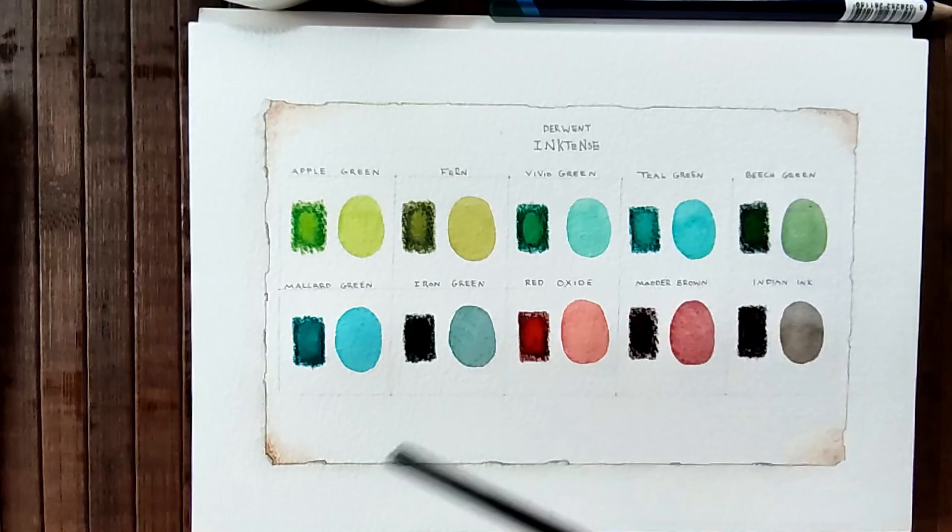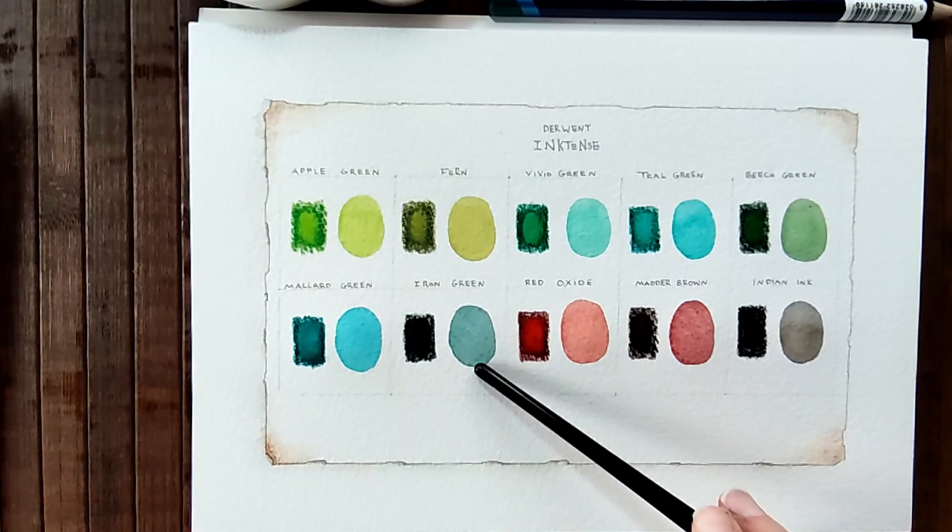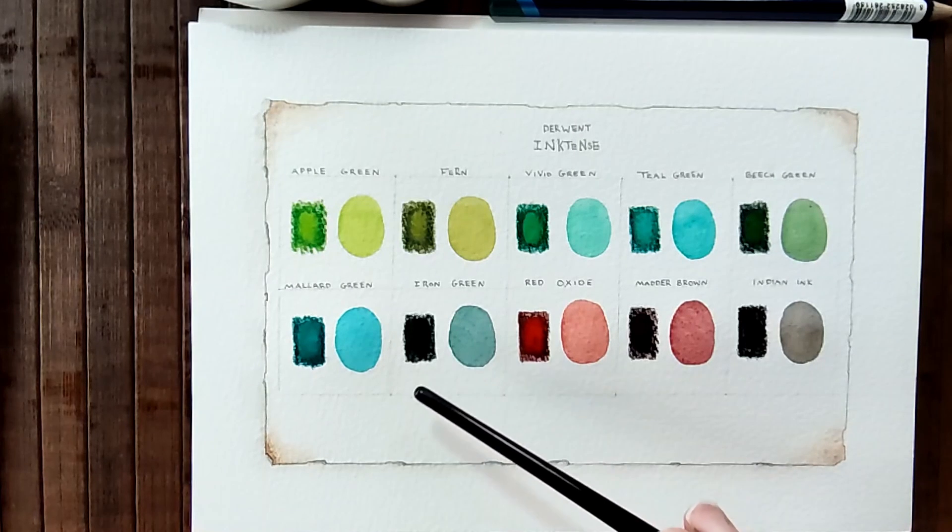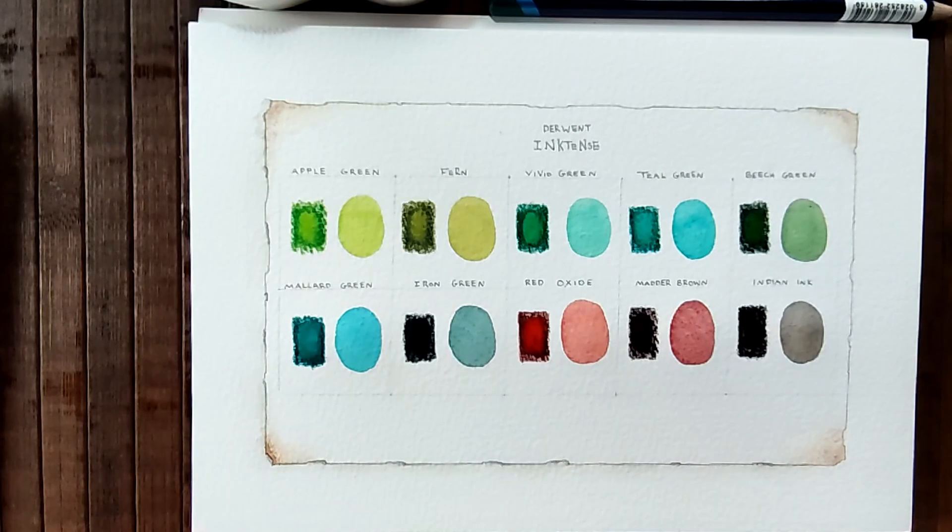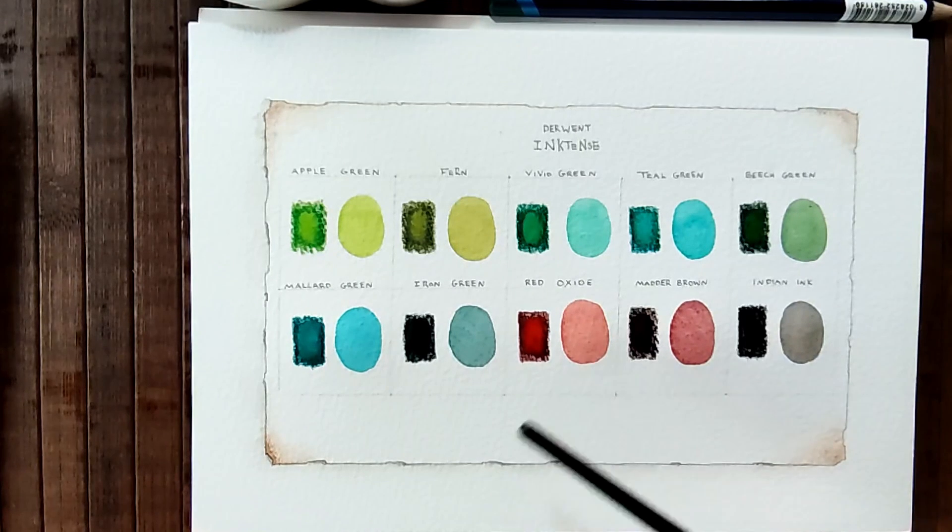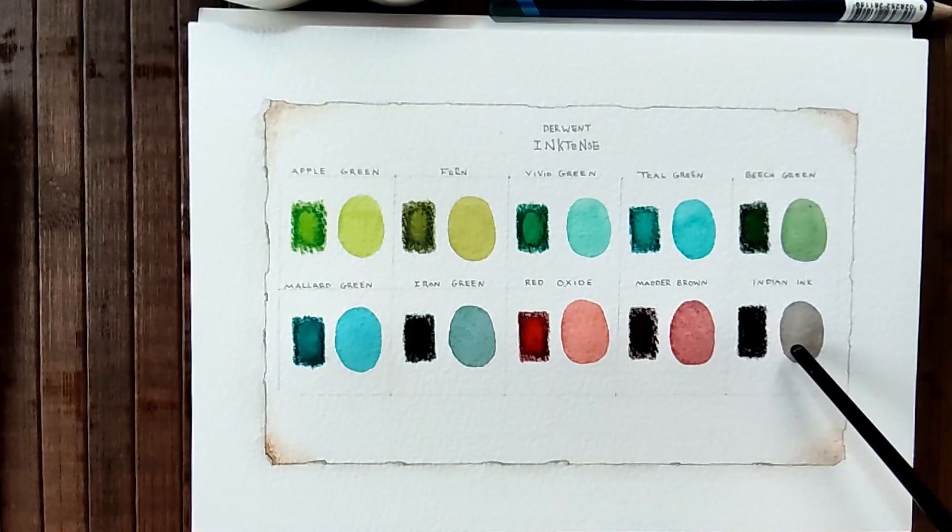Yeah. The iron green definitely dries like a perylene green. It becomes dull. Which I don't mind. It's just something that the perylenes usually do. Apart from that perylene I tried the other day in my other video. Red oxide. It's a very pretty colour. I bet that heavily diluted that would produce some beautiful pinks. Same goes for Madder Brown. And the Indian ink, which is a lovely warm black.